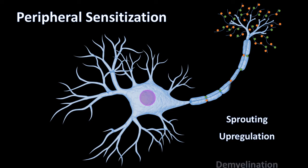Sometimes demyelination of myelinated nerves will occur, exposing the axon of the nerve. This will allow action potentials to start at the axon where they normally shouldn't, and this is called ectopic nerve activity. The word neuroplasticity is commonly used to describe the potential of a nerve changing its properties depending on the environment it is exposed to and its activities.